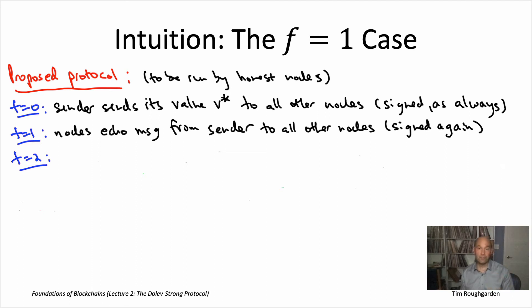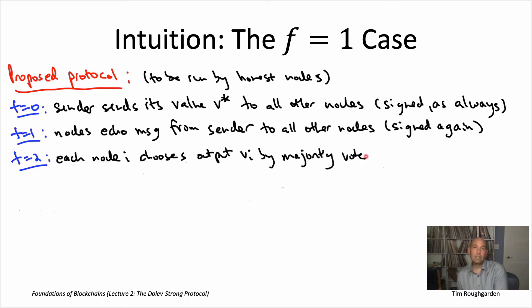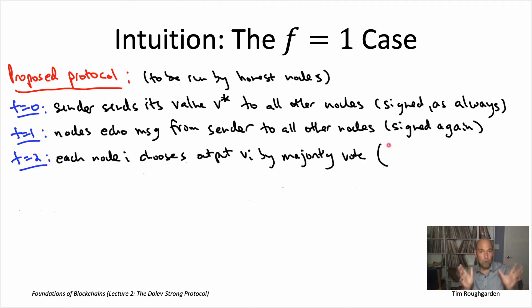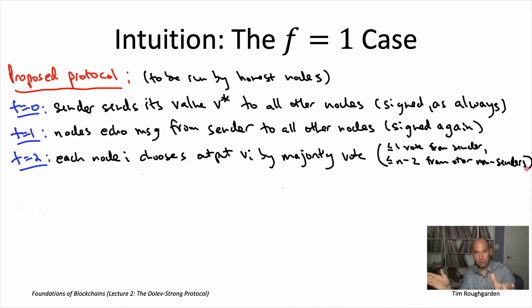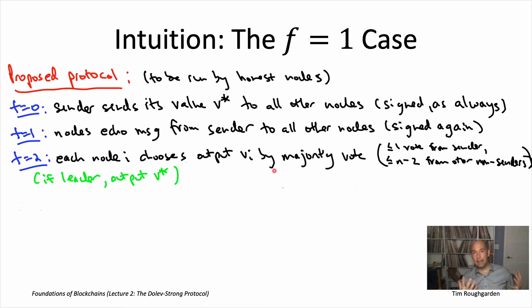The only hard case is when you're a non-sender and different messages you've seen refer to different values — some refer to v1, some to v2 — and you have to decide which to output. The most natural way is by majority vote: output the value with the largest number of messages. You have at most one vote from the sender directly, and at most one vote from each of the other n minus two non-senders. You just output the most frequently voted-for value among those n minus one or fewer votes. If there's a tie, break it consistently — for example, favoring the alphabetically smallest value mentioned.